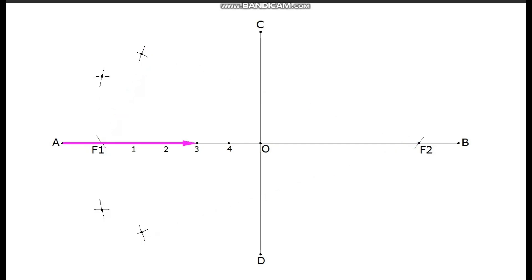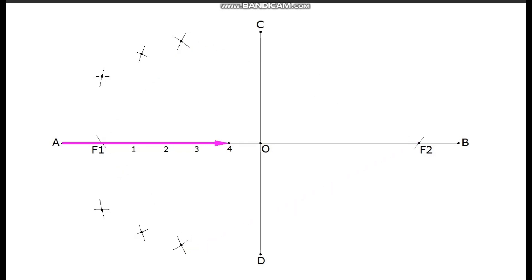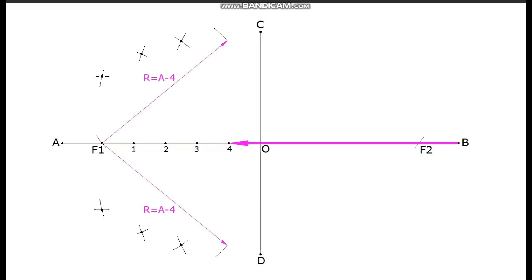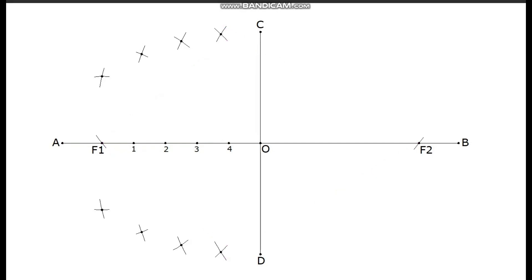Measure the distance of A3; with F1 as center, draw arcs above and below the major axis. Measure the distance of A4; with F1 as center, draw arcs. Measure the distance of B4; with F2 as center, draw arcs to intersect the previous arcs. In a similar way, points of the ellipse should be traced for the other half also.